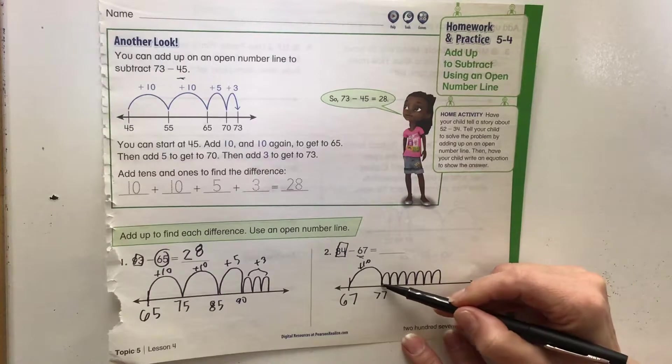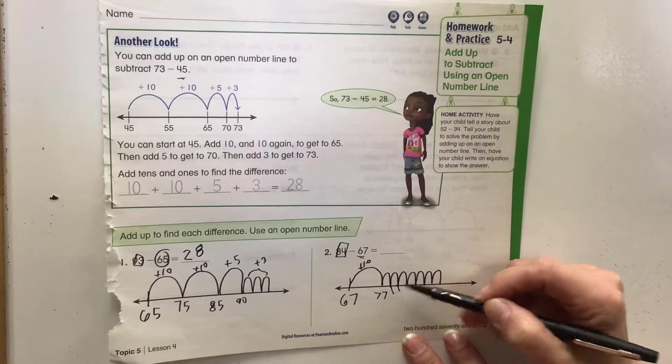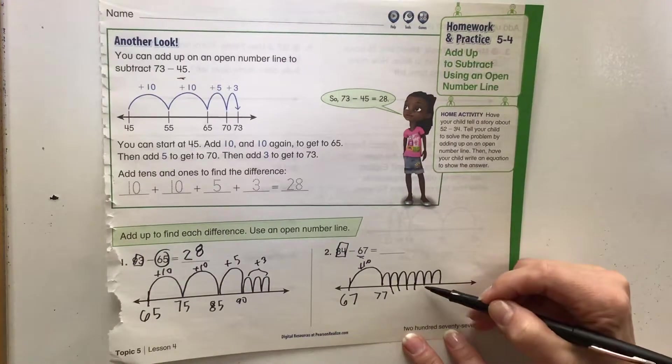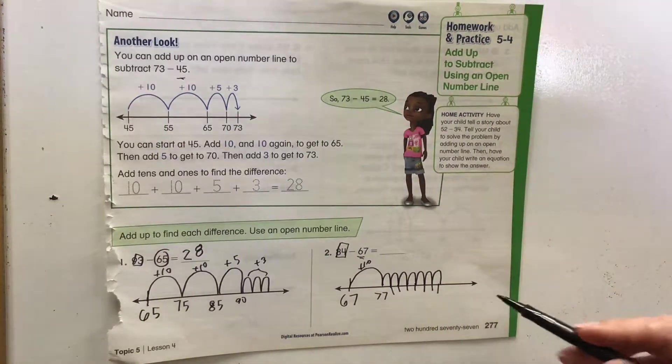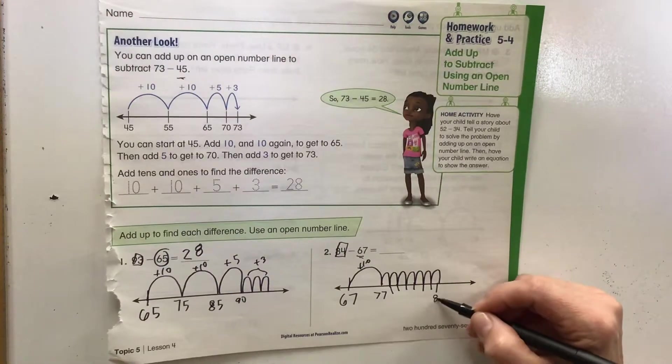So we have 77, 78, 79, 80, 81, 82, 83, 84, gets us up to where we need to be.